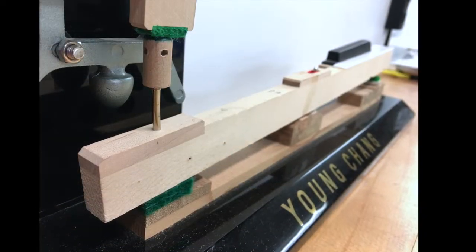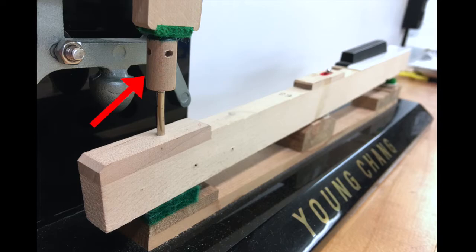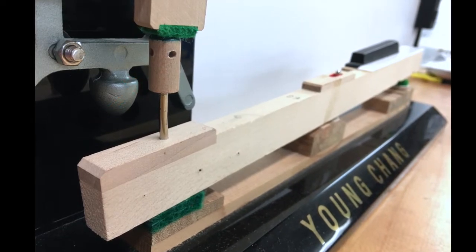The back of the key holds an adjustable brass, wood, or plastic piece called the capstan. The capstan communicates the motion of the key to the whippen.